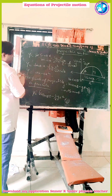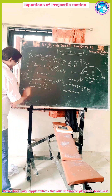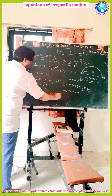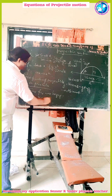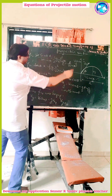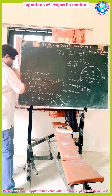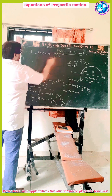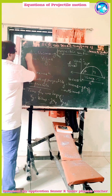Now we find the time for maximum height. Using equation 2, vy = v0 sin theta minus g t. At maximum height, vy = 0, so we write: 0 = v0 sin theta minus g tm. Therefore, tm = v0 sin theta upon g. This is equation 4.